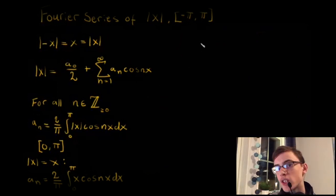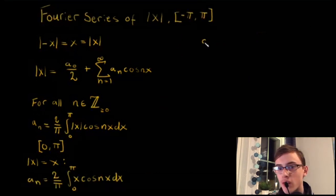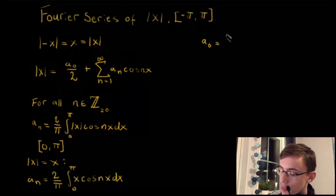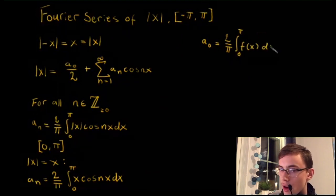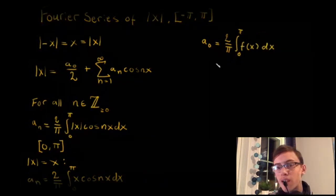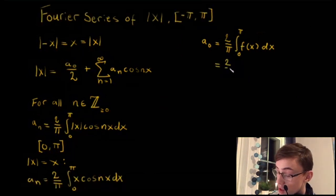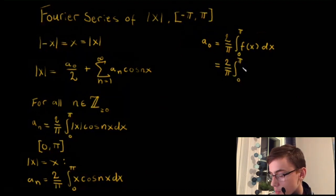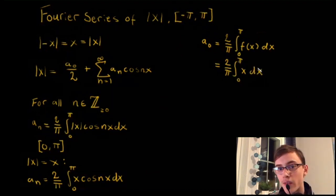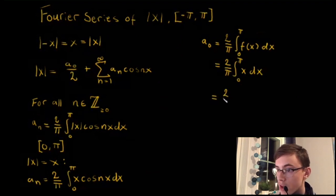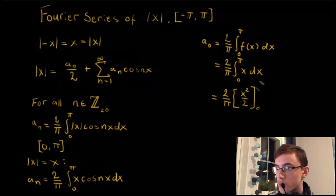By definition, a₀ equals 2/π times the integral from 0 to π of f(x) dx, since cos(0) = 1. This becomes 2/π times the integral from 0 to π of x dx, which evaluates to 2/π times x²/2, evaluated from 0 to π.